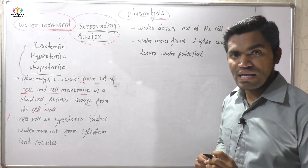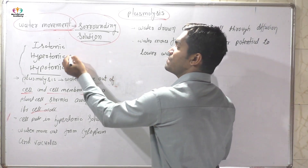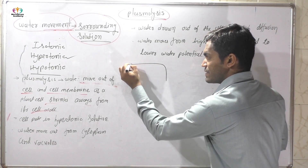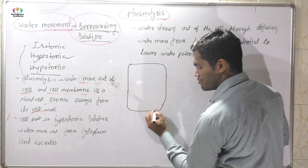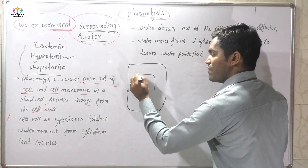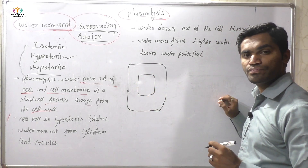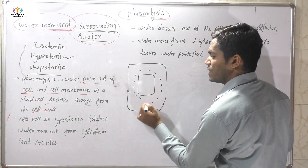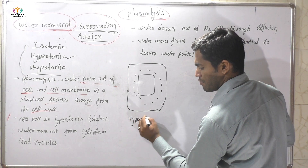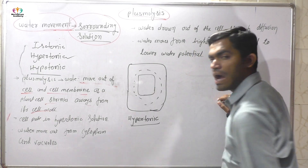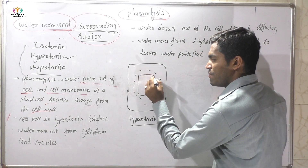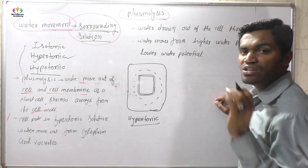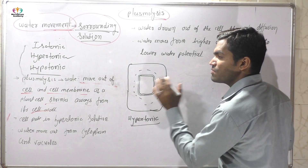Now we discuss what happens in the plasmolysis process. The cell is placed in a hypertonic solution. Inside the cell there is cytoplasm, and outside the cell there is the hypertonic solution. The cell has a cell membrane and a cell wall, which are attached to each other due to the presence of the cytoplasm.